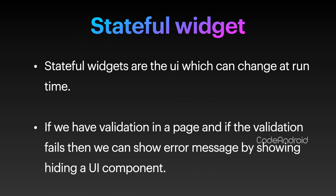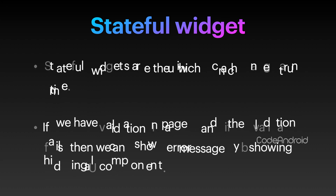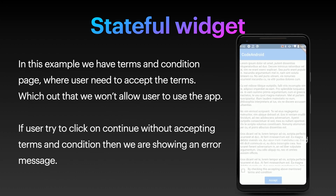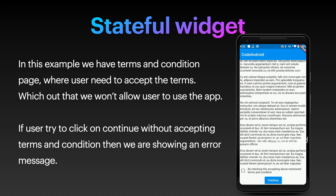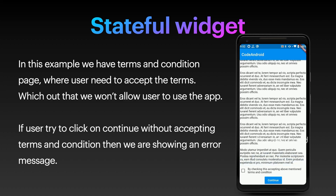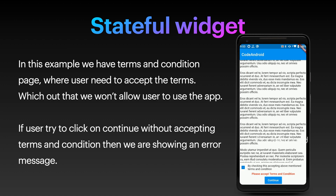As the name suggests, the UI will be linked to a state, so that by modifying the state, we can update the UI at runtime. If we have a validation and if it fails, then we can show an error message by showing a UI component. In this case, we need to modify the state of a UI widget which causes the UI to re-render. In this example, we have a terms and condition page where the user needs to accept terms and condition before using the application. If the user tries to click on the continue button without accepting the terms, then we are showing an error message. Like this, if we need to do any UI change at runtime, then we need to use StatefulWidget.